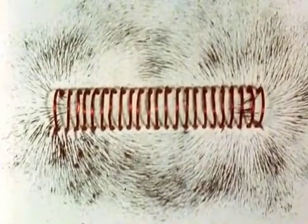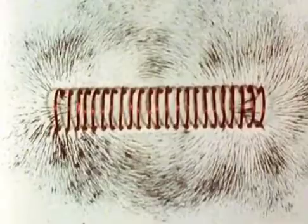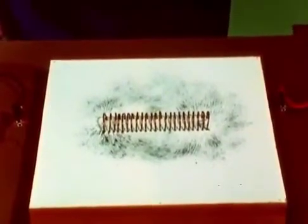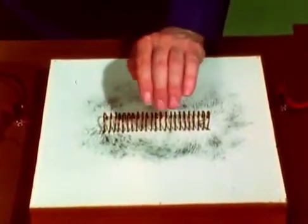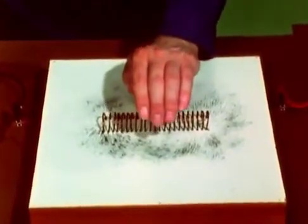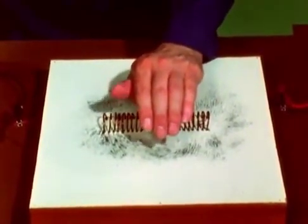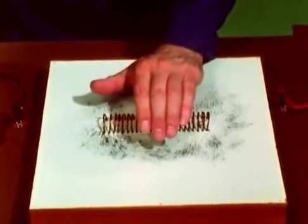Again, we need to know the direction of the field, and this is found with another left hand rule. You wrap the fingers of your left hand around the coil, pointing in the direction in which the electron current is flowing. Then your thumb points to the north pole end of the coil.